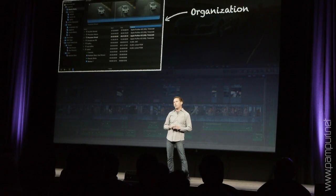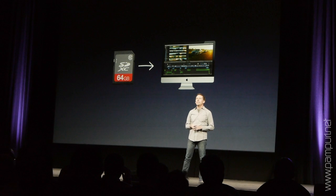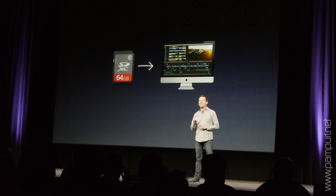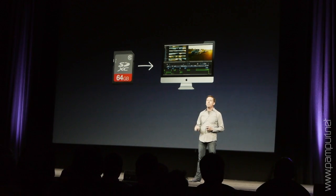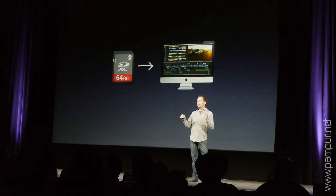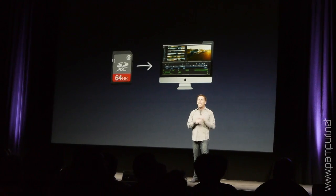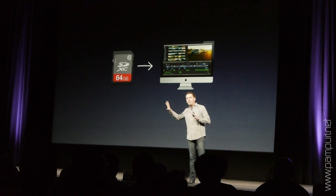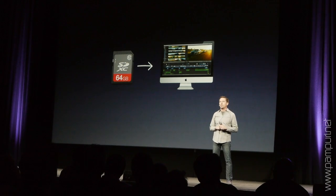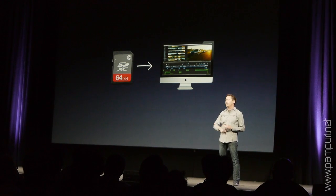That brings me to the first feature I want to talk to you about, which is content auto-analysis. Everybody in this room is dealing with an ever-increasing quantity and quality of media, and you need to get that into the editorial system as quickly as possible and begin editing immediately. With the new Final Cut Pro X, you're able to plug in modern cameras such as an AVCHD camera, begin the ingest process, and before the ingest is even done, you can start editing. We copy the media off the camera in the background and start preparing it for the editorial process, and when we're done, we silently swap it out for you so you're not interrupted waiting for ingest.